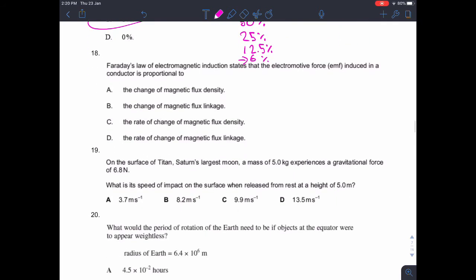Question 18. Faraday's law of electromagnetic induction states that the electromagnetic force induced in a conductor is proportional to - this is just a simple definition. It's the rate of change of something. So it's not A or B because it's how quickly it changes. And if you have a coil, then it's also multiplied by the number of turns in the coil, which is the difference between flux density and flux linkage. So we're going to go with D.